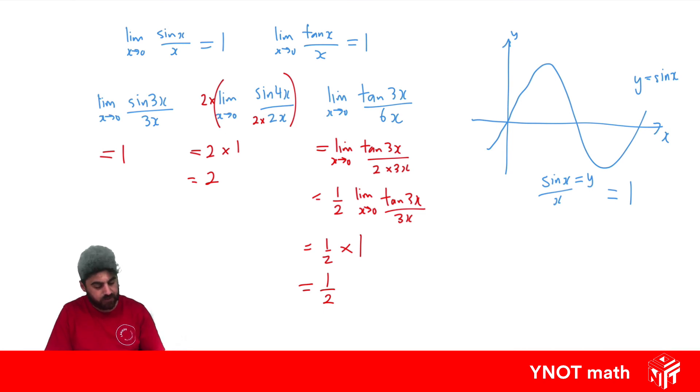And a nice result is that you'll see that whatever the initial ratio was with the angle and the denominator actually ends up being the answer. So 3 divided by 3 is 1, 4 divided by 2 is 2, and 3 divided by 6 is a half.